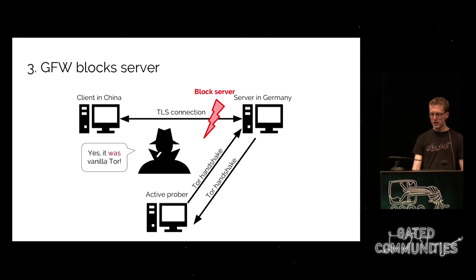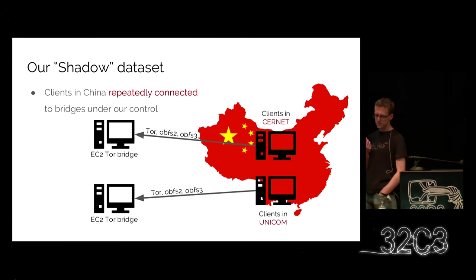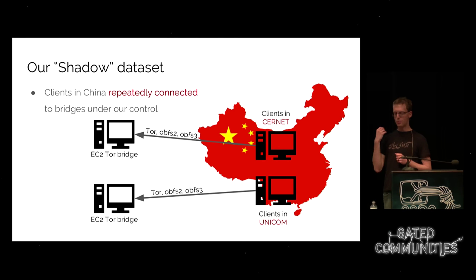We started compiling datasets for our research project. The first we called the shadow dataset — you'd get vantage points in China in two different ISPs: Unicom, which is a very large ISP, and Cernet, the China Education and Research Network. It turns out they filter slightly differently, which is quite interesting. We had systems in both networks and repeatedly established Tor connections to bridges under our control — bridges are basically unpublished Tor relays for censorship circumvention.